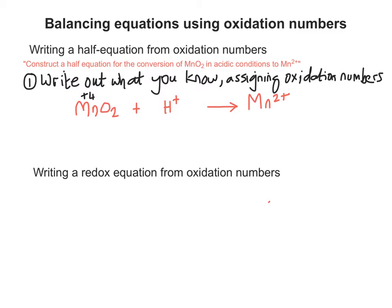We know that oxygen has an oxidation number of minus 2, so 2 of them is going to be minus 4. So that's why the manganese in MnO2 is plus 4.